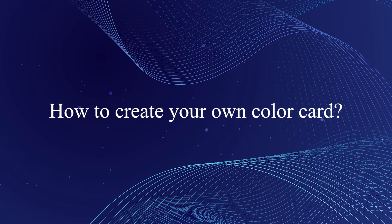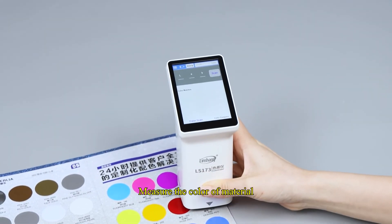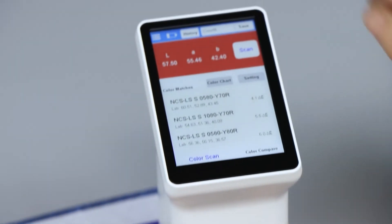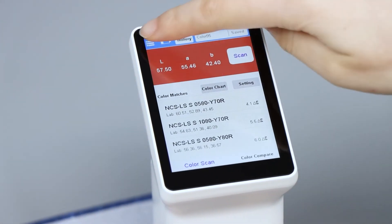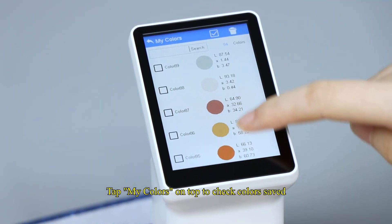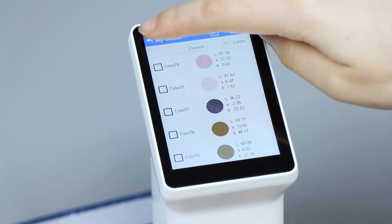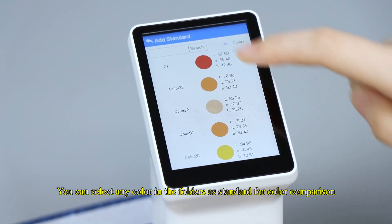How to create your own color card. Measure the color of material. Name it and store. Tap my colors on top to check colors saved. You can select any color in the folders as standard for color comparison.